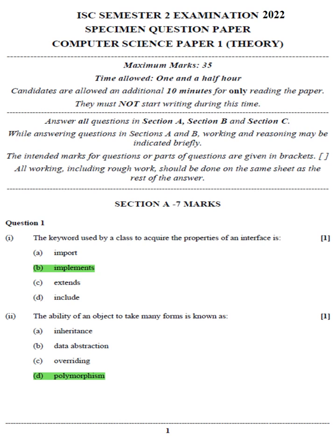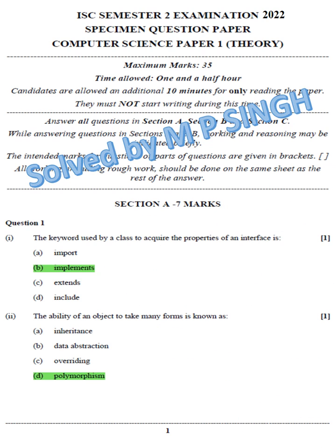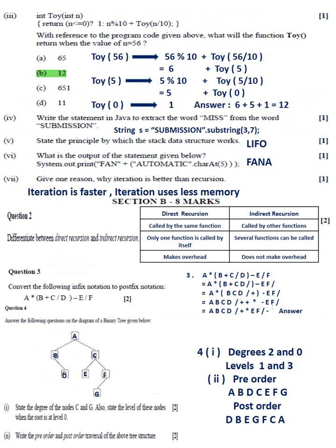ISC Semester 2 Examination 2022 specimen question paper, Computer Science Paper 1 Theory. The solution is as follows. Section A, Question 1: Part 1 Option B, Part 2 Option D, Part 3 Option B, Part 4 answer: String s equals string submission dot substring(3, 7). Part 5 answer: LIFO. Part 6 answer: fauna. Part 7 answer: iteration.